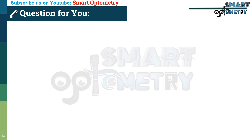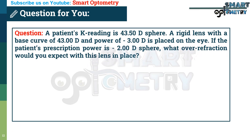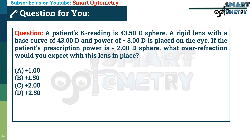Question for you: A patient's keratometry reading is 43.50 D. A rigid lens with a base curve of 43.00 D and power of −3.00 D is placed on the eye. If the patient's prescription power is −2.00 D, what over-refraction would you expect with this lens in place? A) +1.00 D, B) +1.50 D, C) +2.00 D, D) +2.50 D. Type your answer in the comment box.